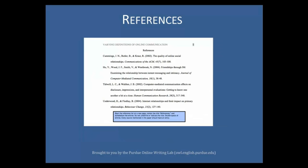At the end of the main body of your paper, insert a new page and center the title 'References.' Do not underline, italicize, or bold this title. Capitalize it. Then list all of your in-text citations on this page in alphabetical order by author's last names.